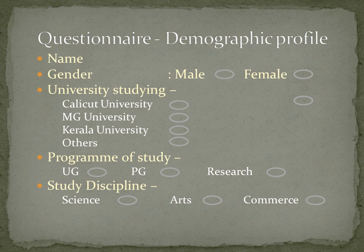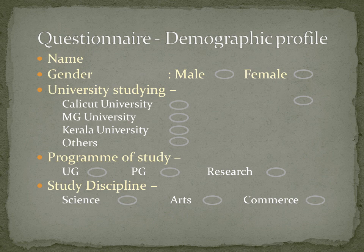If only the first three options were included, some respondents may find it difficult to find a suitable answer — that is why 'others' is included, making it exhaustive so everyone can choose an answer. These profile questions are decided based on their use in the research. Unnecessary information need not be collected. Only collect a variable if it will be useful for classification or testing.